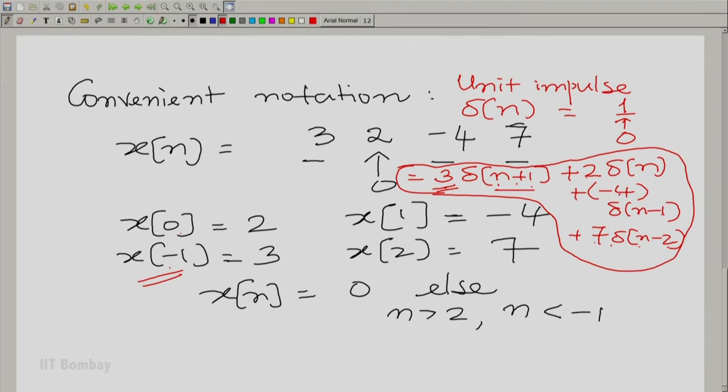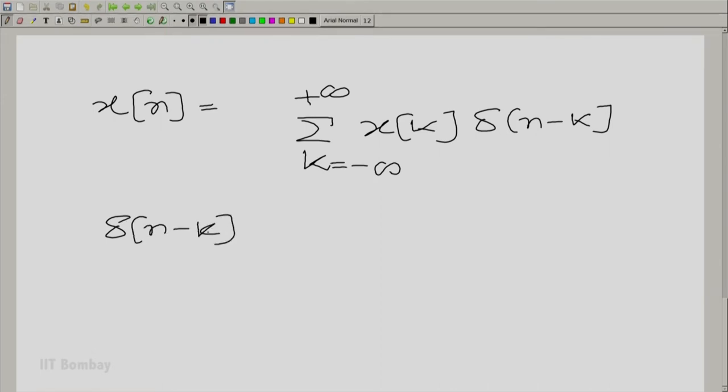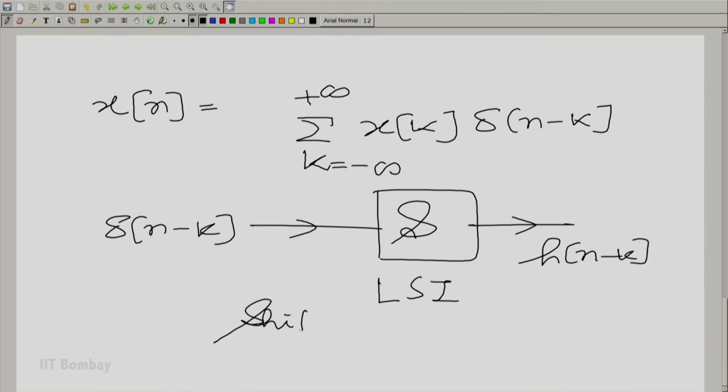If you look at this particular example, 3 is x of minus 1. So you are saying x of minus 1 times delta n minus minus 1 plus x of 0 times delta n minus 0 plus x of 1 times delta n minus 1 plus x of 2 into delta n minus 2. In general, any x n is essentially a sum over all integer k, x of k times delta n minus k. Of course, in general k goes from minus to plus infinity. And therefore, now we have a case for linear shift invariance systems. We know what happens when delta n minus k is given to the system.